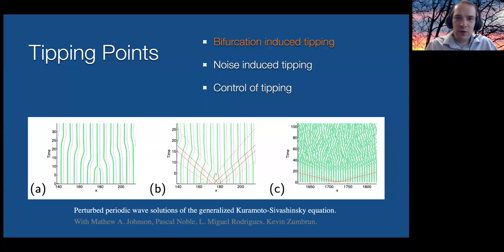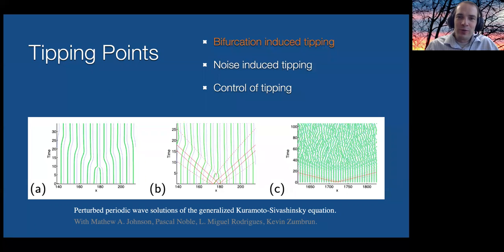The idea with bifurcation-induced tipping is that you have a traveling wave solution — a stationary solution in a co-moving coordinate frame — and you want to know if this traveling wave is stable. That is, if it's perturbed a little bit, will that perturbation evolve back to a translate of the original traveling wave? This is important in modeling because if you want to observe a traveling wave, you'd expect it to be stable or at least metastable.